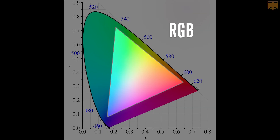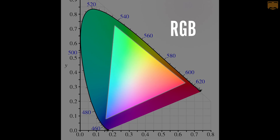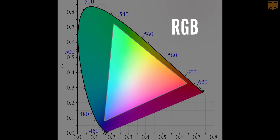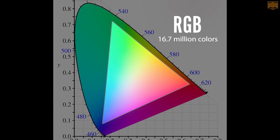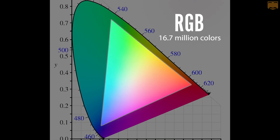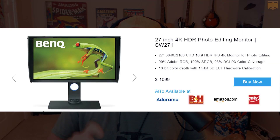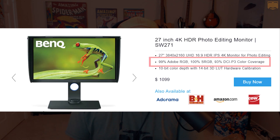Most displays today — TVs, monitors, phones — use the RGB gamut. There are a few small differences, but Adobe RGB and sRGB are probably the most well known. These gamuts have roughly 16.7 million possible colors, and most digital art apps default to that gamut. You'll see these gamuts referenced in the specs and marketing materials of monitors, especially on the high end.